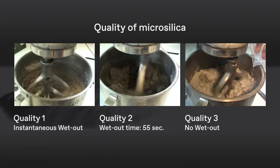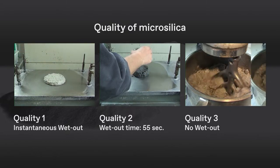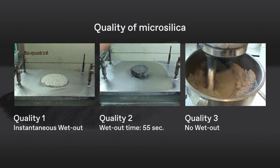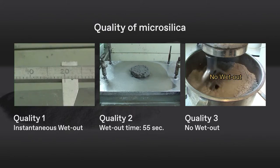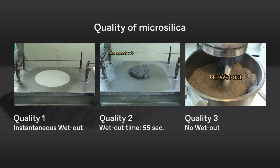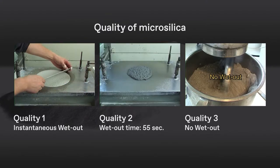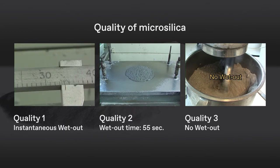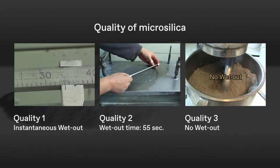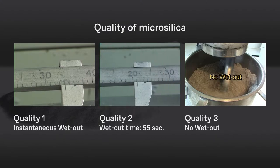The effect of Elkem Microsilica quality on flowability in a refractory application can be dramatic as shown in these videos. At left, we are using a high grade of microsilica with low content of impurities. In the middle, we are using a multi-purpose Elkem Microsilica with higher level of impurities, which affects the wet-out time. The video on the right shows the effect of using a low grade of silica fume.